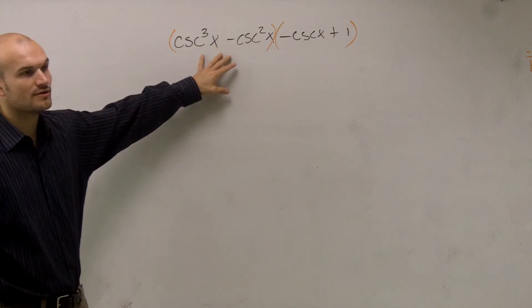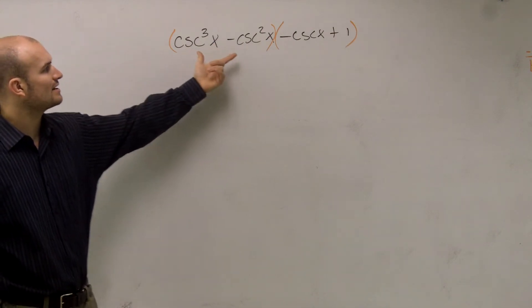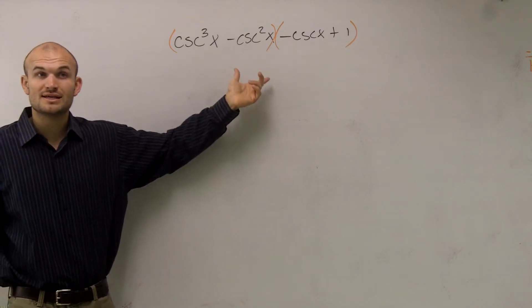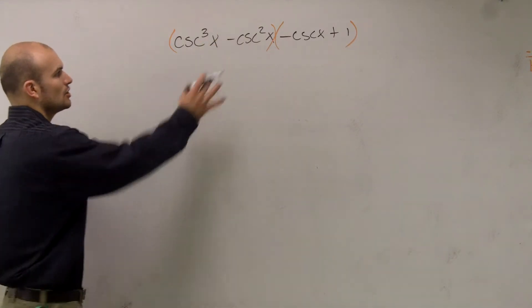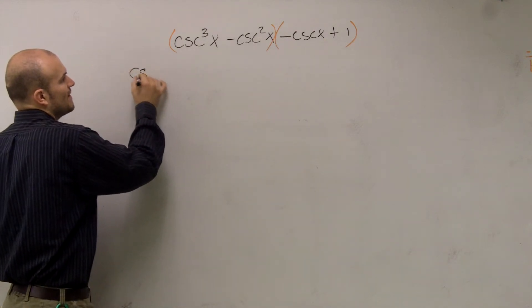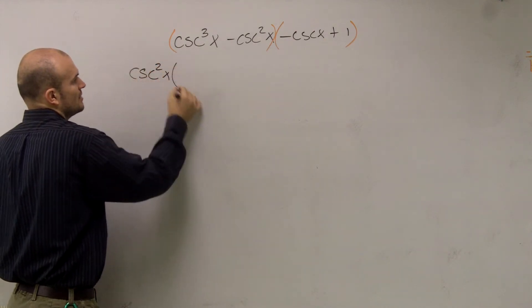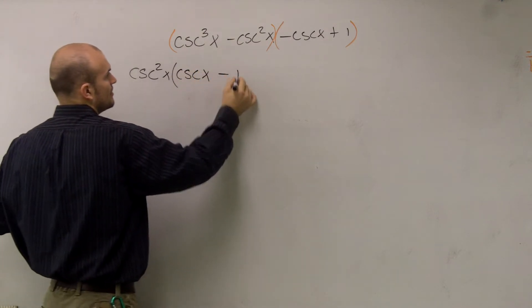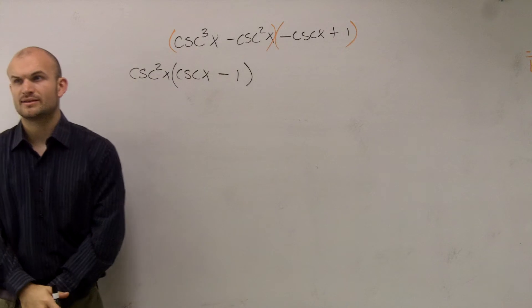So for the first set, I know I can factor out a cosecant squared. I could factor out a cosecant, but that's not the greatest. I can factor out a cosecant squared. So when I factor out a cosecant squared of x, I'm left with still a cosecant of x minus 1. Does everybody follow me for what I did there?